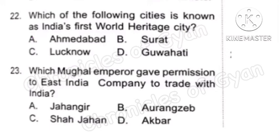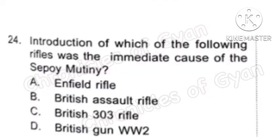Question 23: Which Mughal Emperor gave permission to the East India Company to trade with India? The correct answer is Option A, Jahangir.